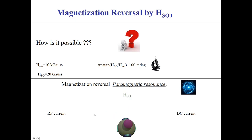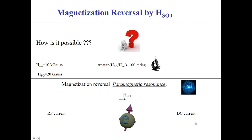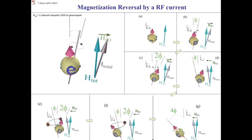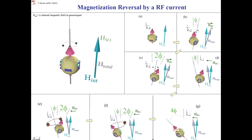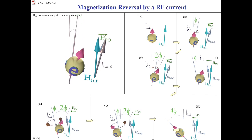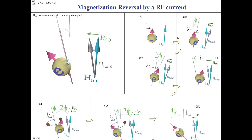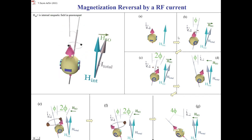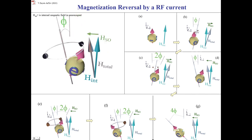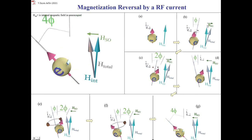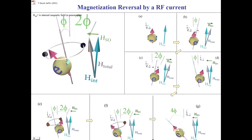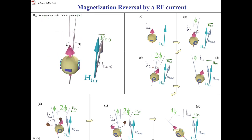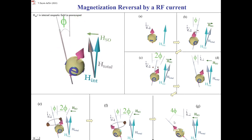Magnetization reversal is possible for RF current whose frequency is close to the paramagnetic resonance, and also possible for DC current without any modulation. This slide explains the mechanism of magnetization reversal by RF current. When the current and the SOT magnetic field are in resonance with the magnetization precession, the precession is enhanced and the precession angle becomes larger after each oscillation period until magnetization reversal. The axis of magnetization precession is slightly inclined under the current-induced SOT magnetic field at the angle phi, which is about 100 mrad. When the field oscillation is in phase with the magnetization precession, each period the precession angle increases by angle 4 phi.